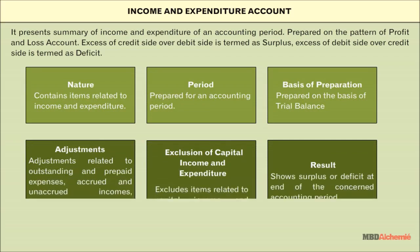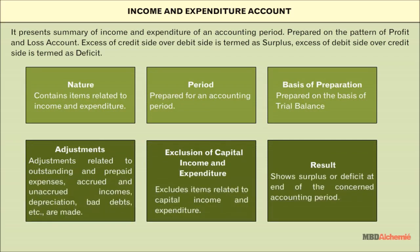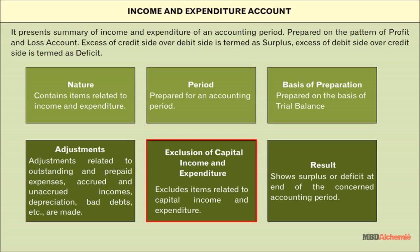Features of the income and expenditure account: it is based on incomes and expenses, prepared for an accounting period, based on trial balance, adjustments are made, capital incomes and expenses are excluded, and it shows surplus or deficit at the end of the accounting year.